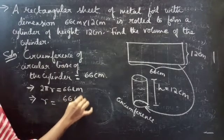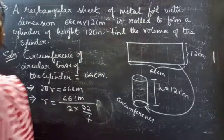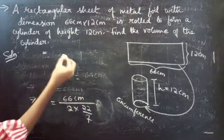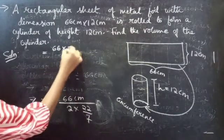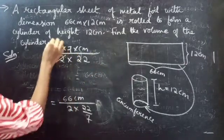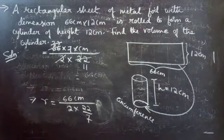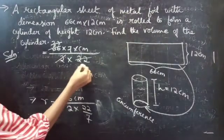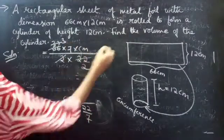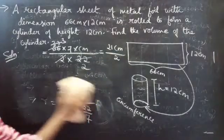So r equals 66 cm divided by 2 into π, taking π as 22/7. This equals 66 × 7 divided by 2 × 22. Simplifying, this equals 21 × 3 divided by 2, which gives r equals 21 cm by 2.